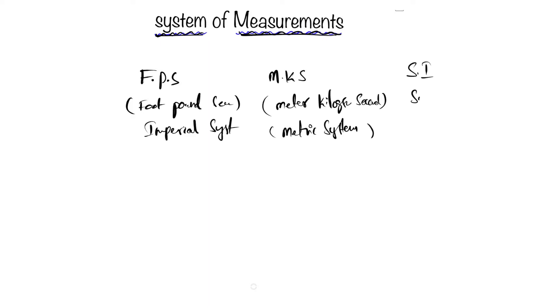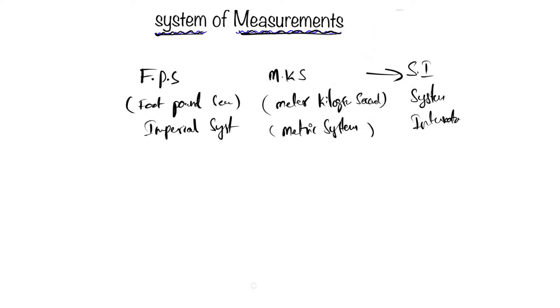SI, the System International. It's an extension of the MKS or metric system. The SI system is predominant in the world—most countries use this SI or metric system, but only a few countries use the imperial system. Now we'll understand how these three different systems offer